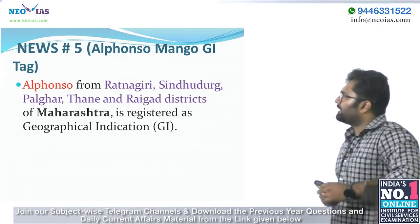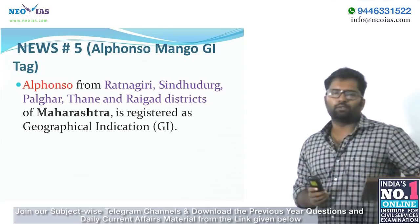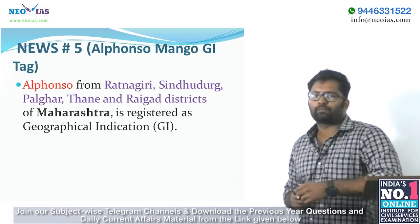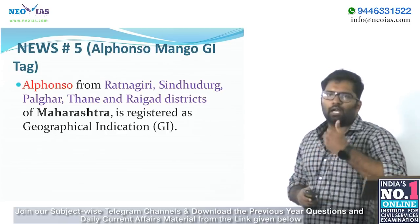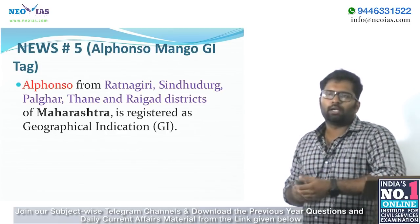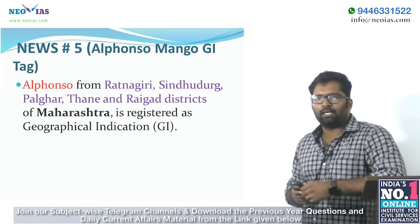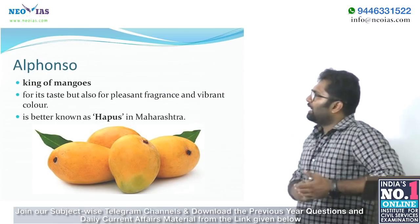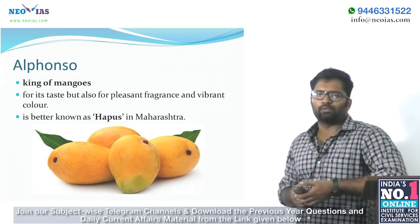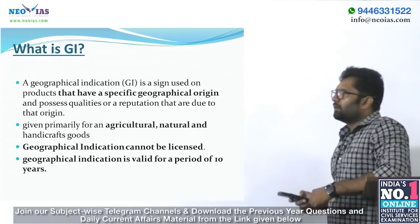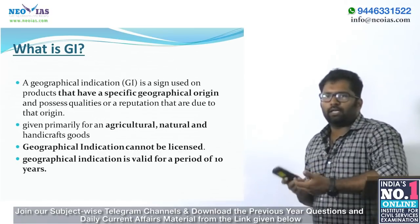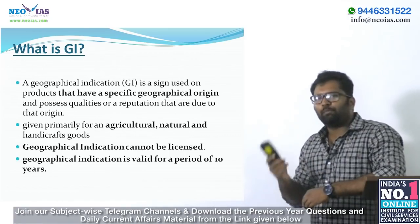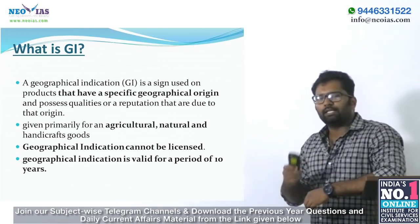The next news is about GI tagging. Alphonso Mango from Ratnagiri, Sindhudurg, Palghar, Thane, and Raigad districts of Maharashtra has been registered as a geographical indication — a new addition to the list of GI-tagged fruits in India. Alphonso Mango is often regarded as the king of mangoes, well known for its pleasant fragrance and vibrant colour.